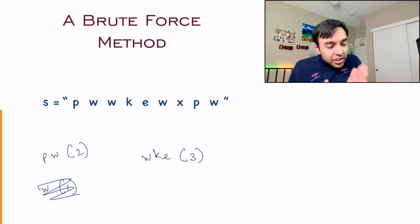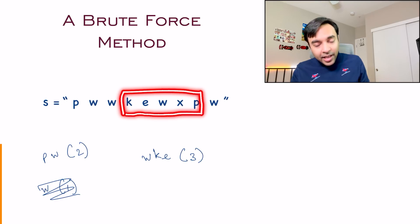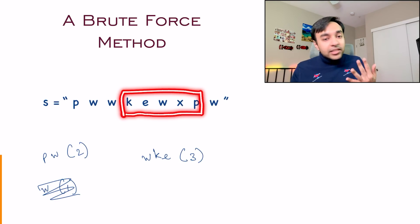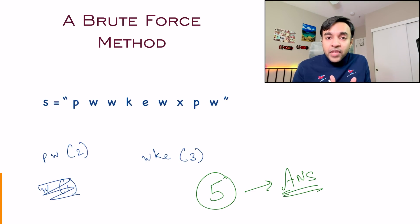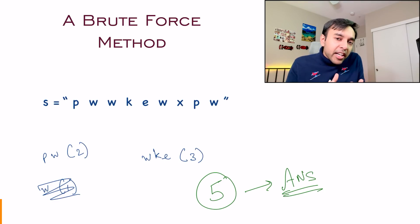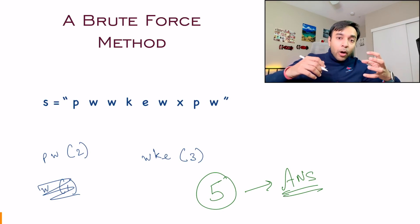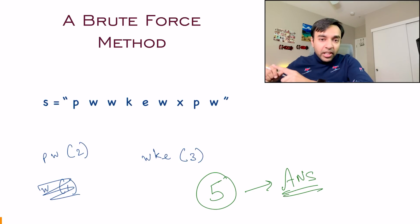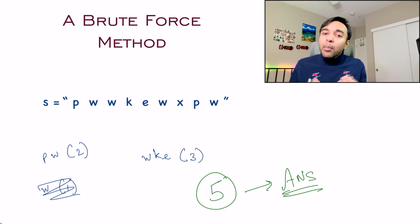This is the brute force approach — you start at every character and try to find the longest substring that is possible. You will find the longest substring when you start at K and go all the way up to P, giving length 5. This approach is correct and will give you a correct answer every time. But the problem is you are taking up so much time iterating over your string again and again, and if you try to write code for it you will get a time limit exceeded error. So you need a solution that traverses your string only once, which is essential since you have to go through all characters at least once. Based upon that, we can come up with an efficient solution.